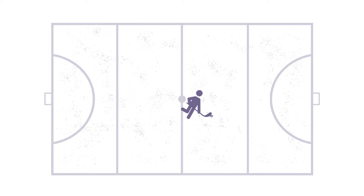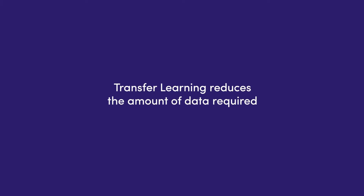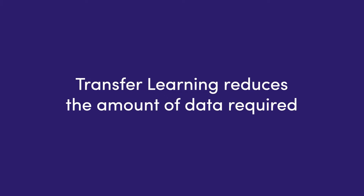Second, transfer learning reduces the amount of data required in additional learning. An algorithm can only learn when fed with enough training data — sometimes millions of data points — and these data might not be available at all or may be too expensive to generate and prepare for the model.